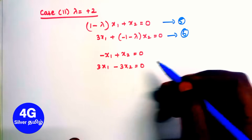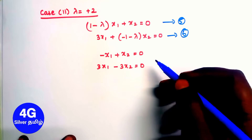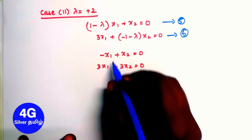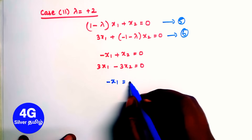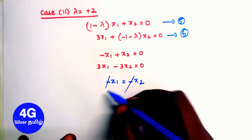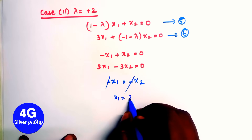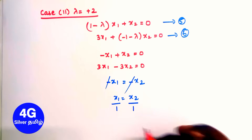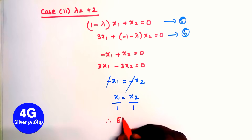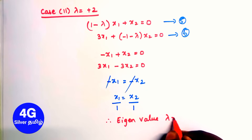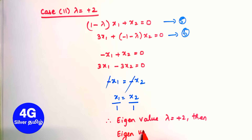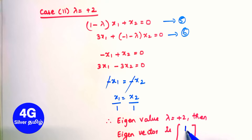Solving one equation: minus x1 plus x2 equals 0, so x1 equals x2. Setting x1 equals 1, then x2 equals 1. Therefore for eigenvalue lambda equals plus 2, the eigenvector is [1, 1].